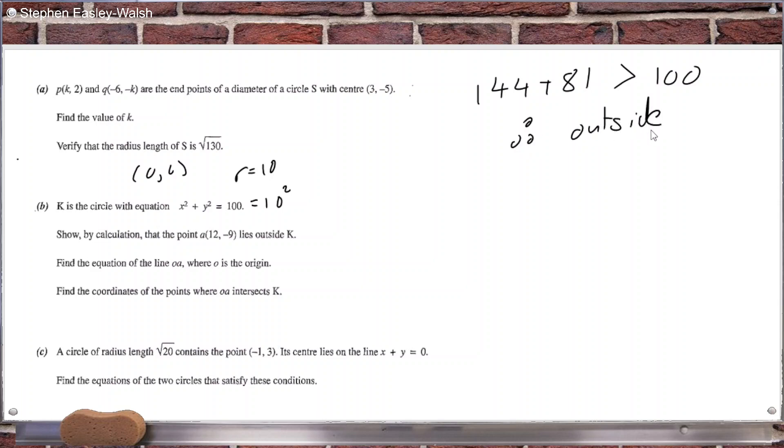You can also calculate the distance from the centre and show that it's greater than the radius. That would work as well. So the distance would be the square root of 144 plus 81, which is greater than 10. So a couple of ways to do it.